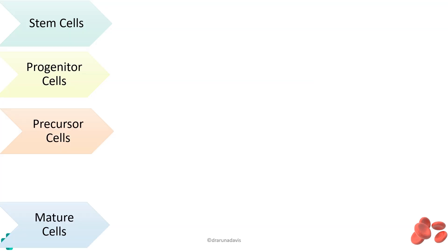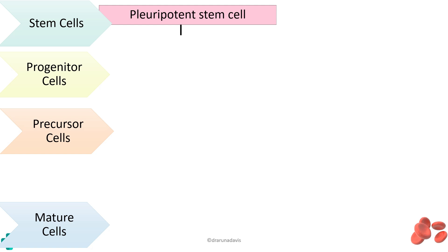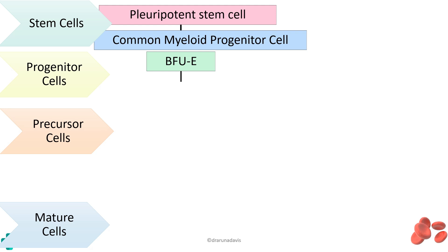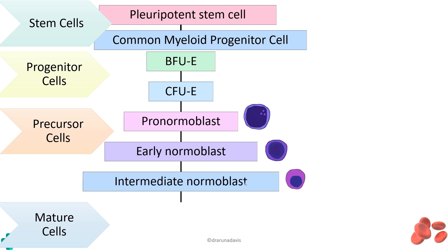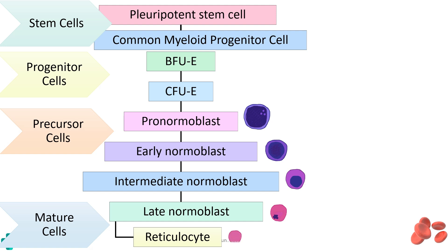When drawing the steps or flowchart of erythropoiesis for an exam, start from the pluripotent stem cells, which differentiate to form the committed stem cell or common myeloid progenitor cell. This differentiates to form BFU-E and CFU-E, then the precursor cells: pronormoblast → early normoblast → intermediate normoblast → late normoblast → reticulocyte → erythrocyte. Not only must you draw this flowchart, but you must also label the characteristic features of each cell — basophilic cytoplasm, nucleoli, fine chromatin, etc.